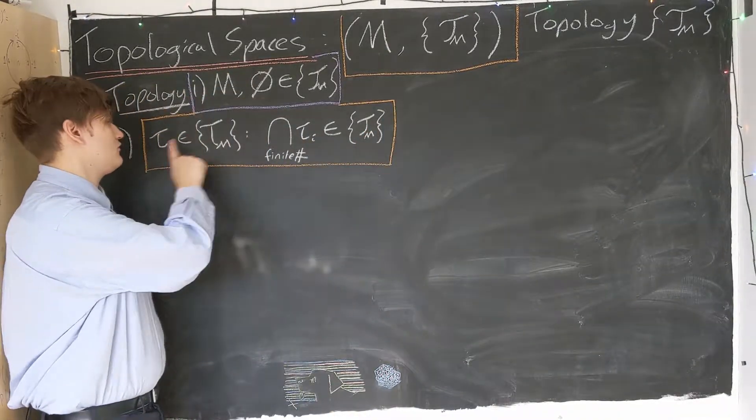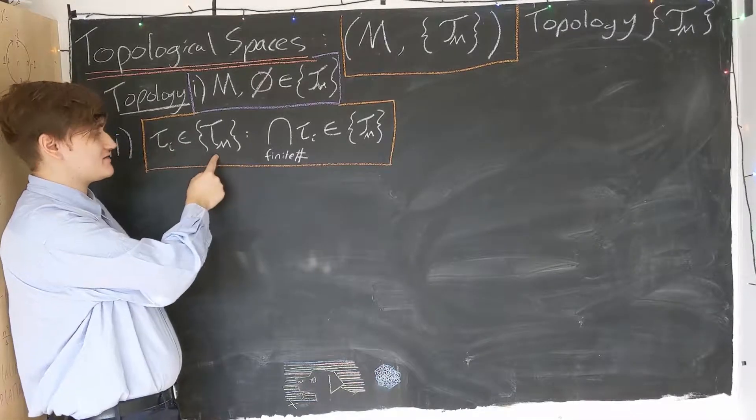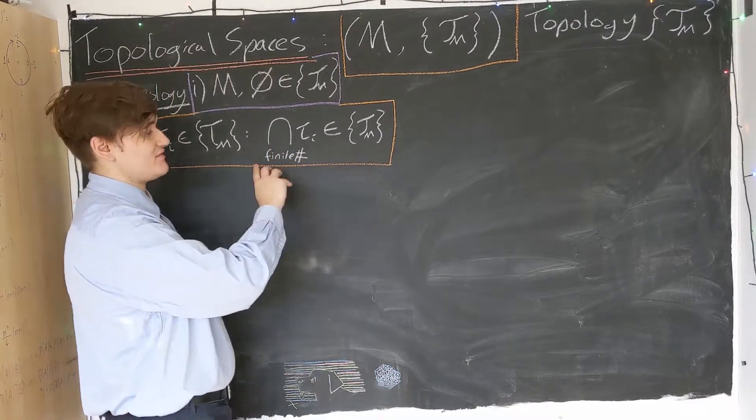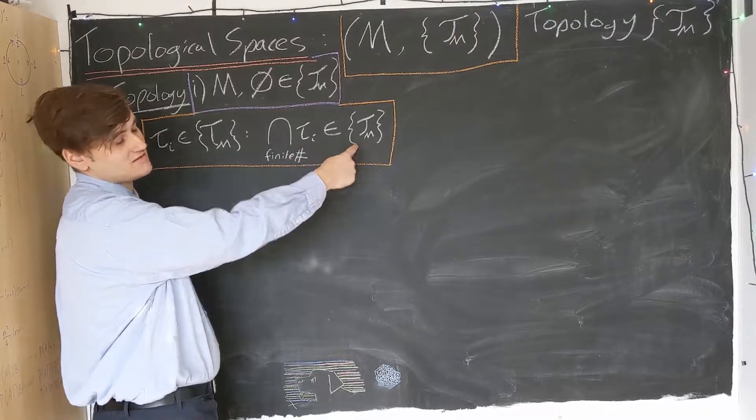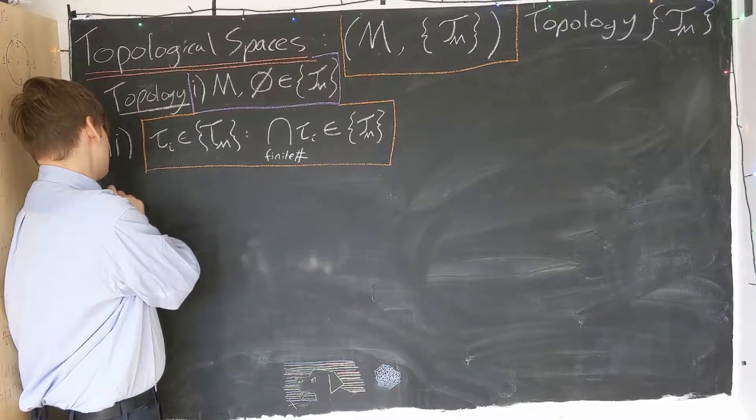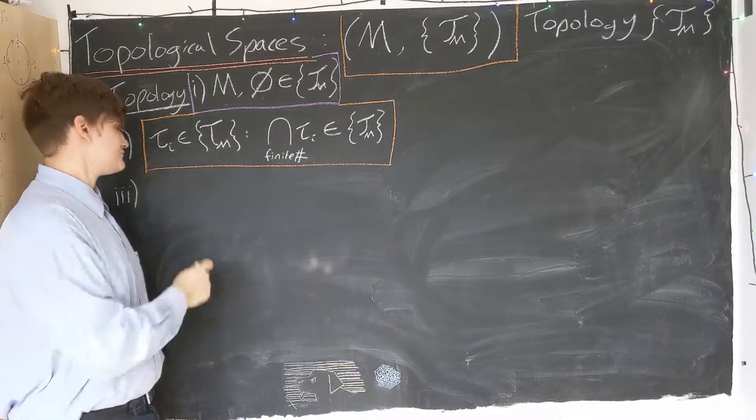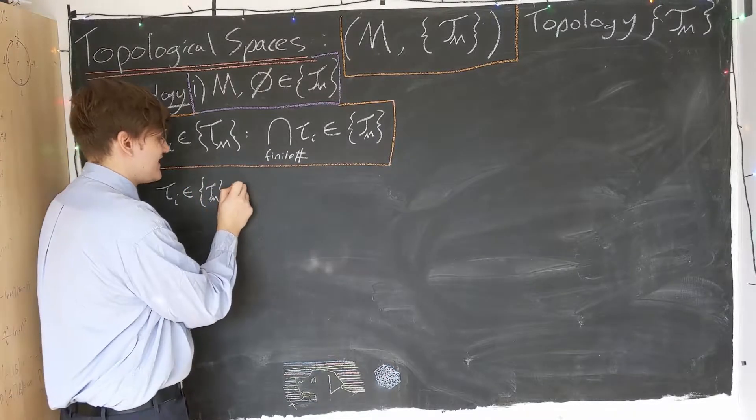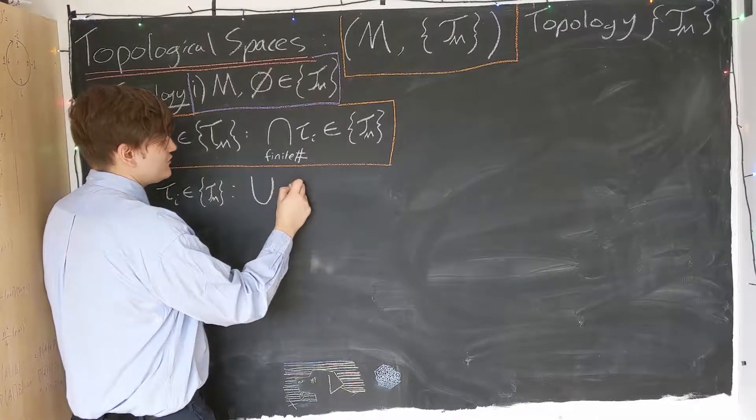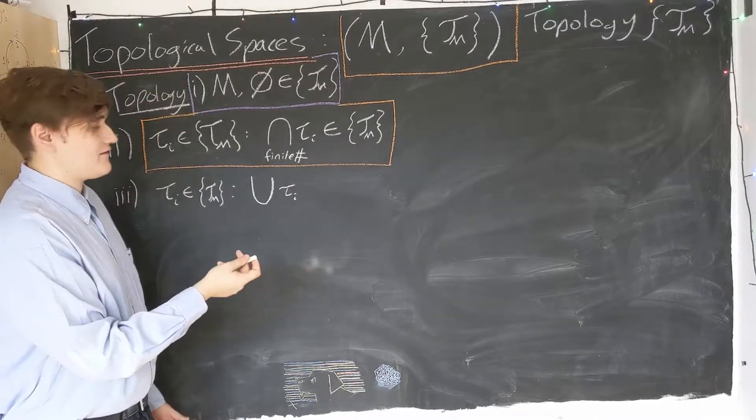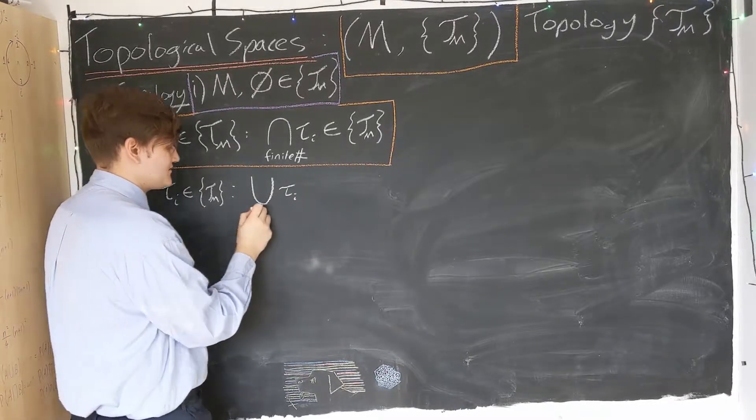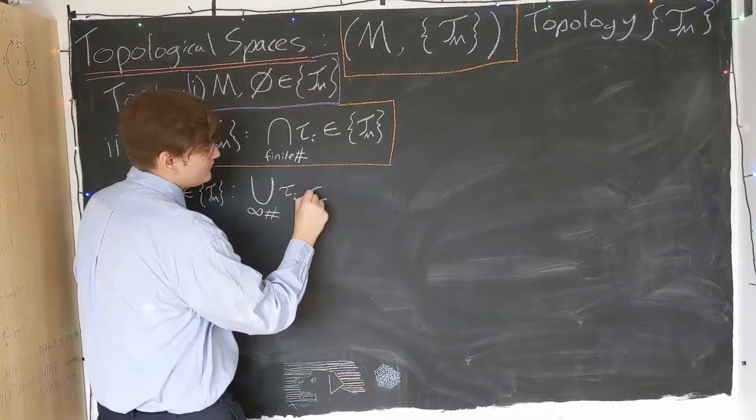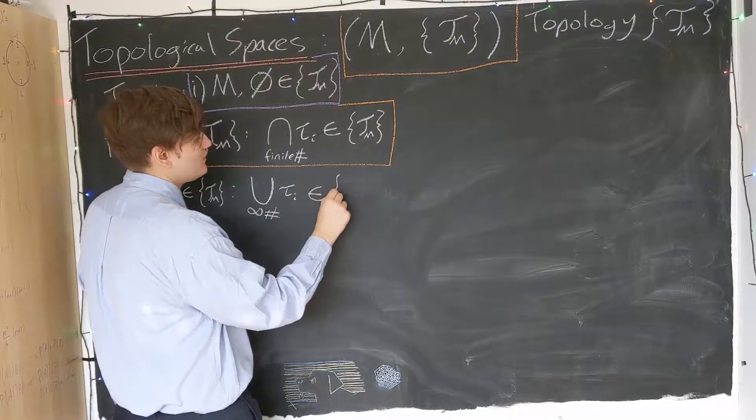So I'll just restate that. We take a finite number of elements which are in the topology and we consider their intersection. This intersection, whatever it is, will just be another set. That intersection set has to also be in the topology. And then similarly, the last property: if we again consider some elements of the topology and consider taking their union, we're now allowed to consider a potentially infinite number of topology elements. So this could be up to an infinite number of unions. The union of these infinite number of sets must also be in the topology.